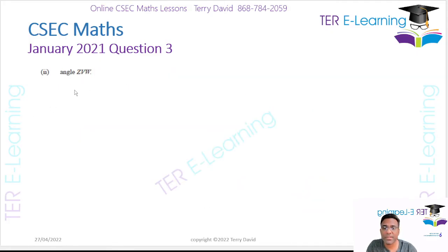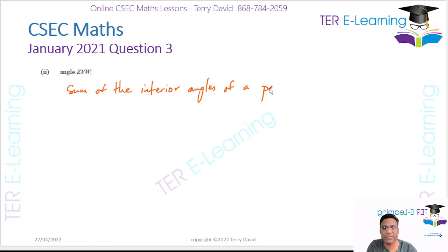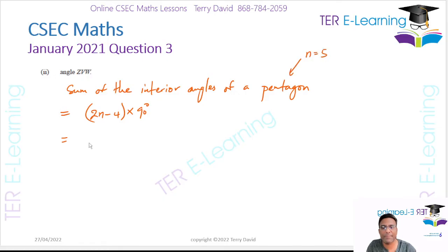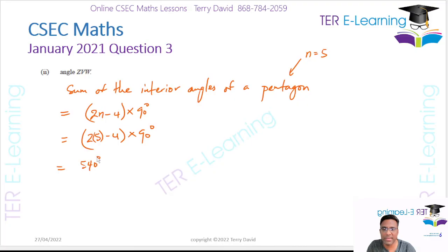You all need to know the formula. The sum of the interior angles of a pentagon is given by (2N − 4) × 90. In this case, because we're dealing with a pentagon, N equals 5. So this is (2 × 5 − 4) × 90. That gives 10 minus 4 equals 6, so 6 × 90 = 540 degrees. The sum of the interior angles of this pentagon is 540 degrees.